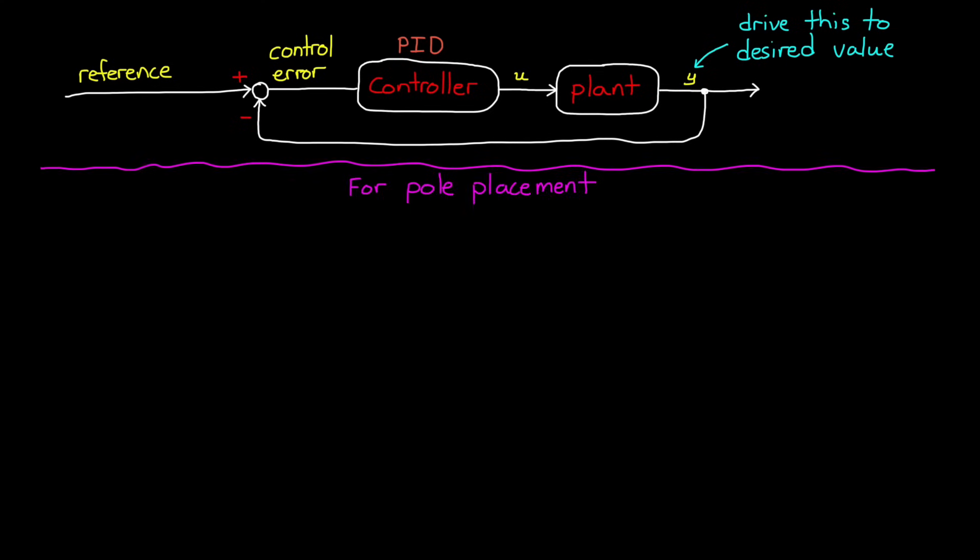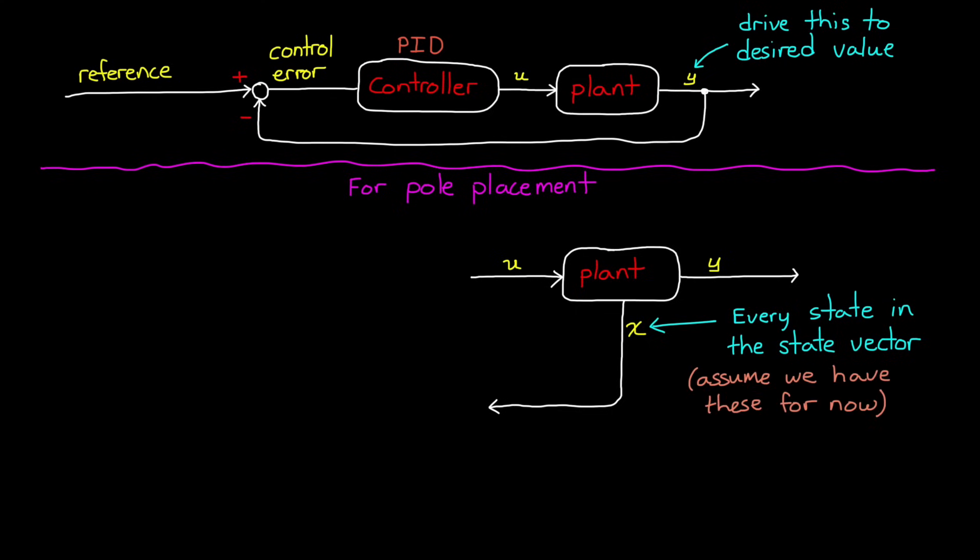But for pole placement, we're going to approach this problem in a different way. Rather than feedback the output Y, we're going to feedback the value of every state variable in our state vector. Now, we're going to claim that we know the value of every state, even though it's not necessarily part of the output Y, and we'll get to that in a bit. But for now, assume we have access to all of these values.